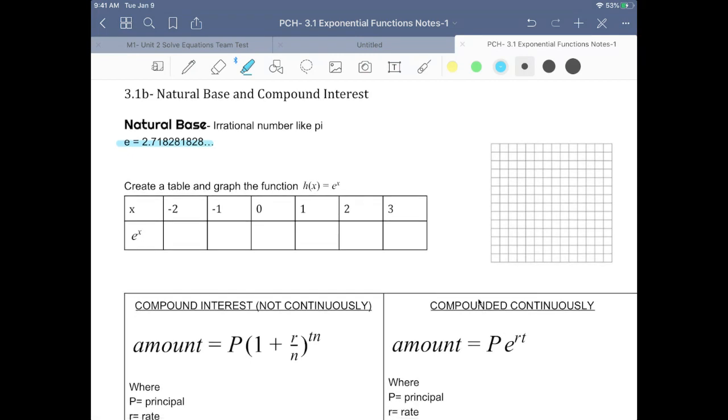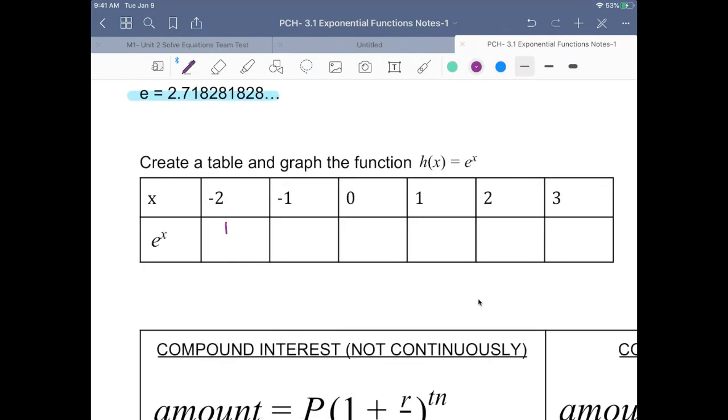We're going to fill out our table and graph. Our table has 1 over e squared, and then 1 over e. E to the 0 is 1. E to the 1 is e. E squared and e cubed.